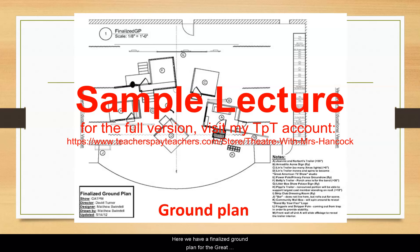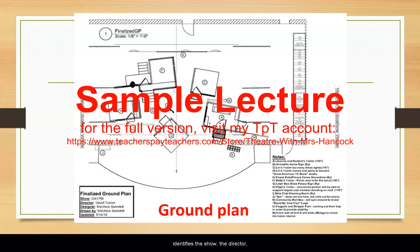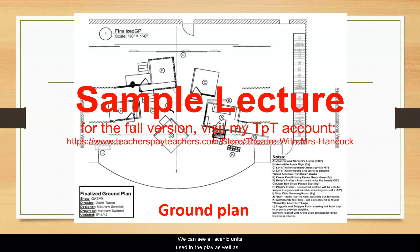Here we have a finalized ground plan for the Great American Trailer Park Musical. Notice the title block in the lower left-hand corner that identifies the show, the director, the set designer, and who drafted the ground plan — in this case, the set designer as well. You can see all scenic units used in the play, as well as the architecture of the theater and the sweeping curve of the apron in front of the proscenium.